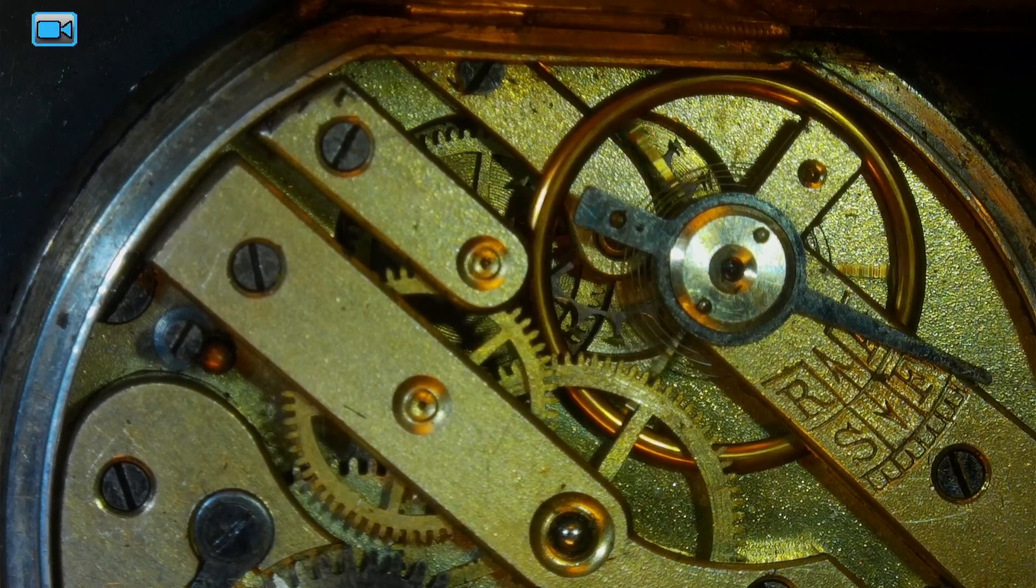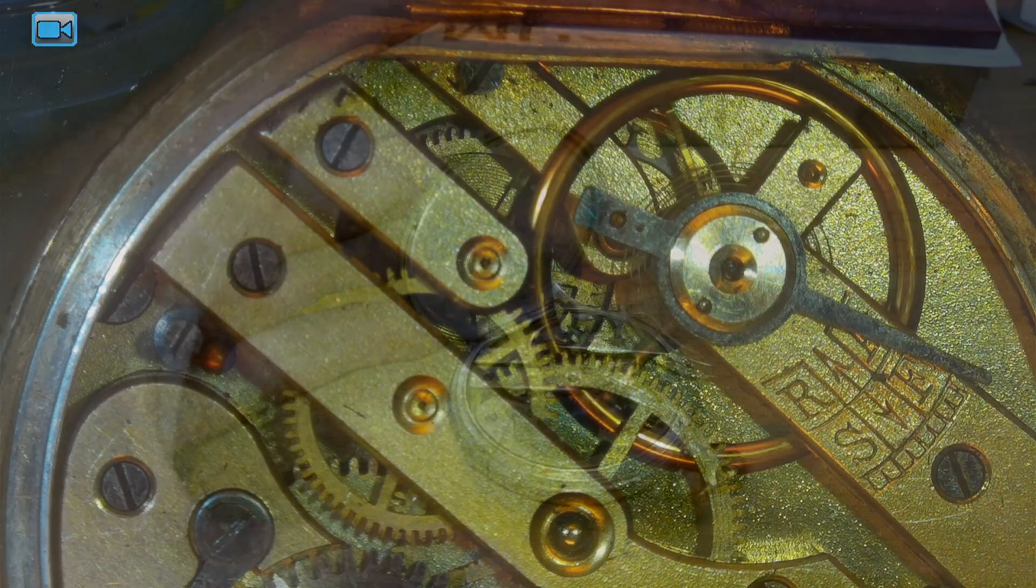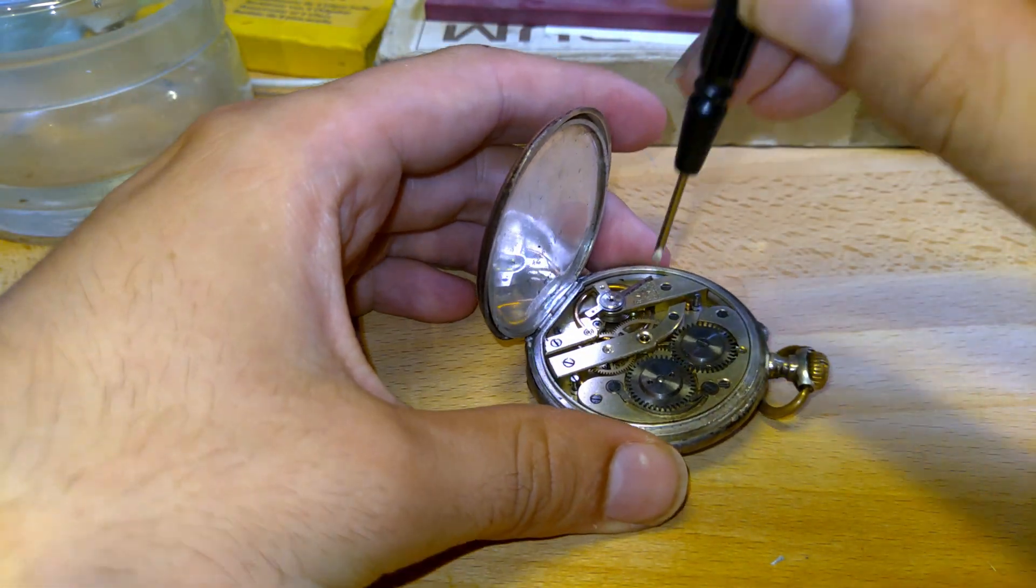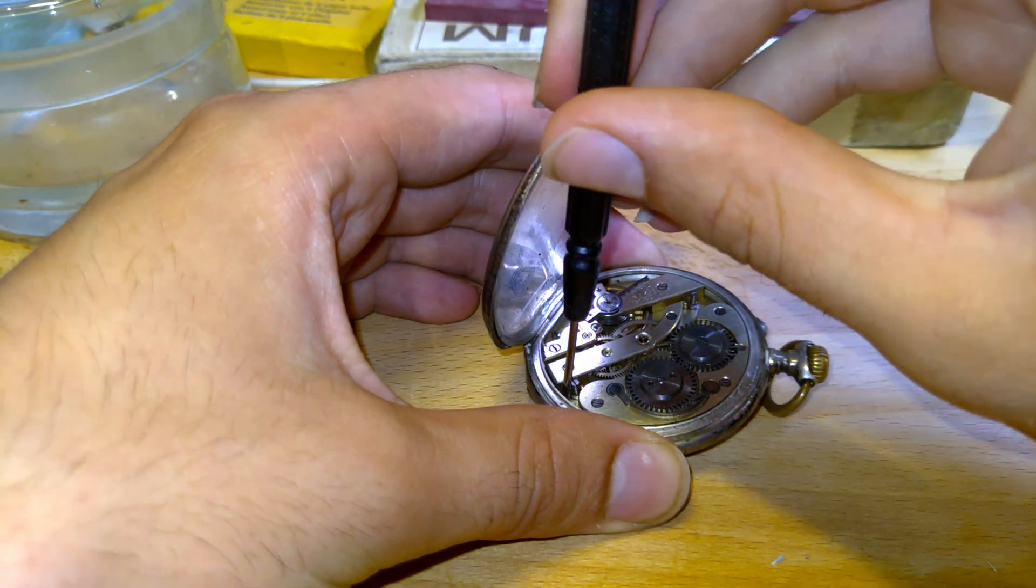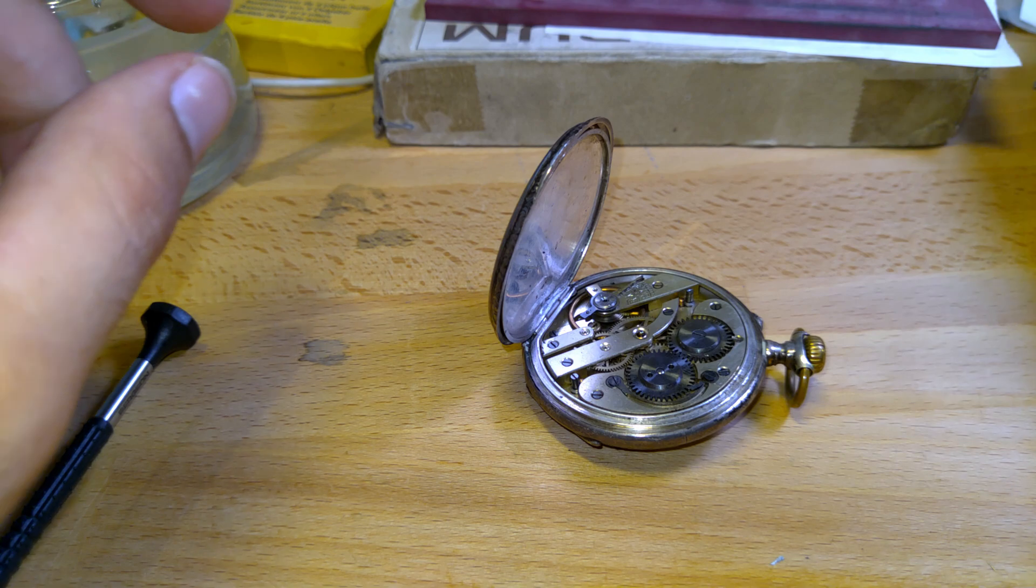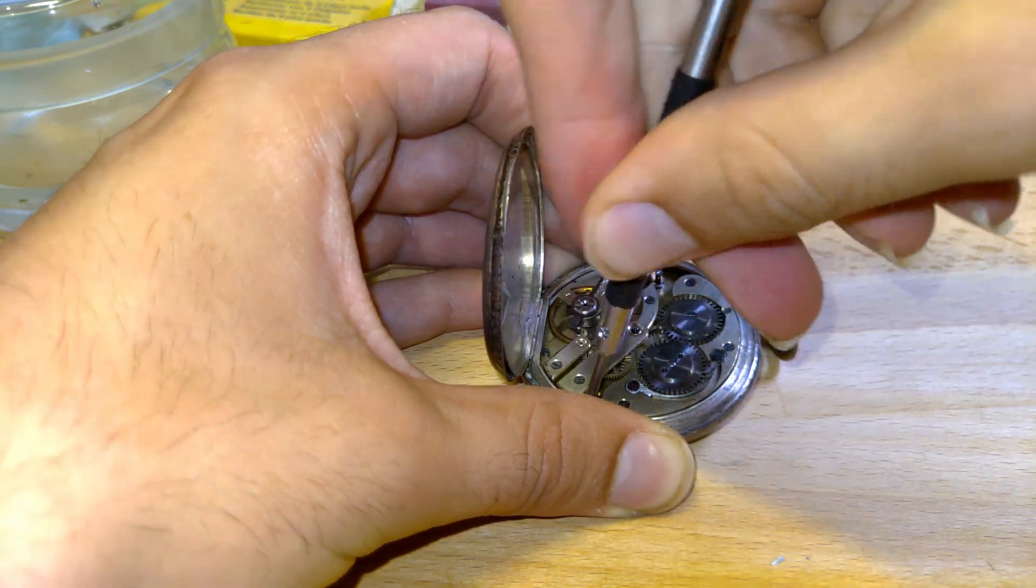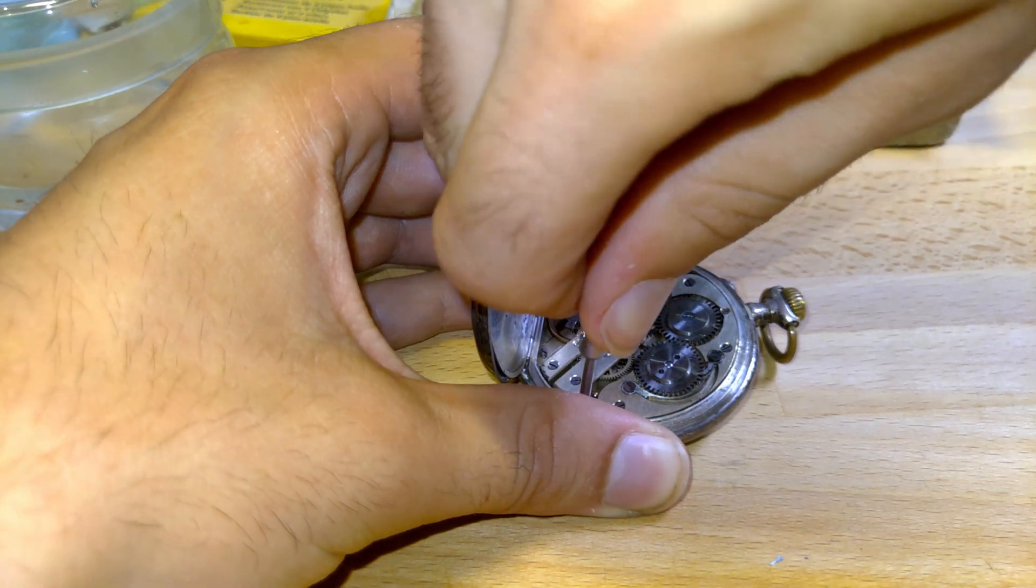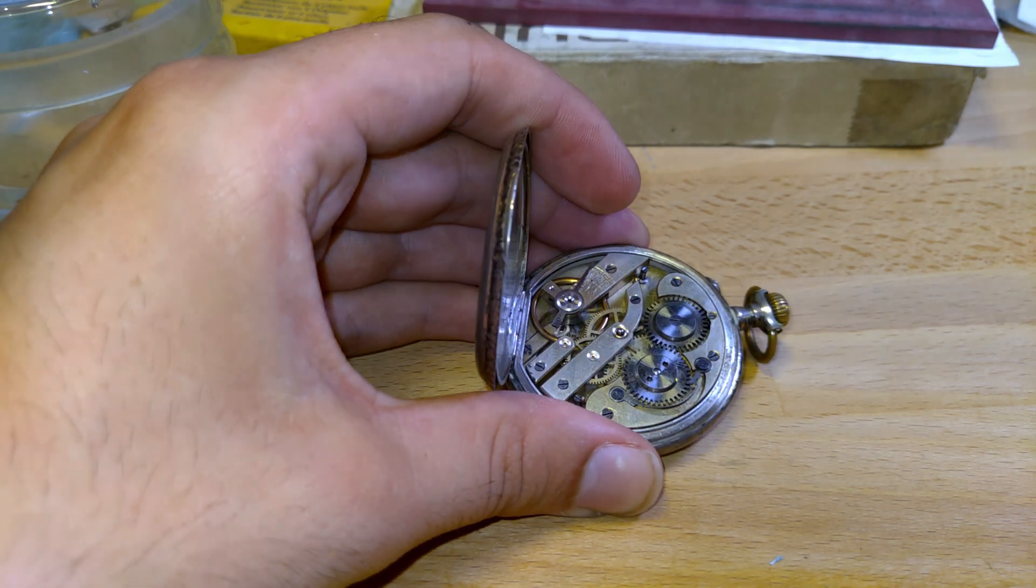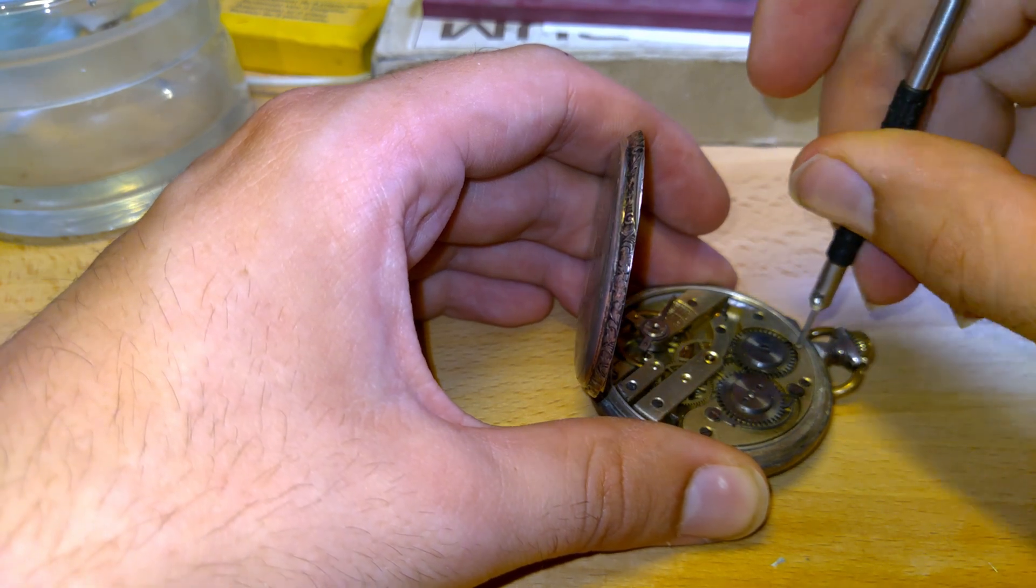I'm going to pop the movement out of the case now and then I will remove the balance and show you that. There's one key screw that I can see here, so I'm going to loosen that up. Oh dear, it's stuck. But it seems it's already open, so without forcing something let's try without it.